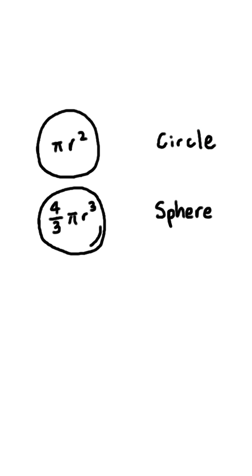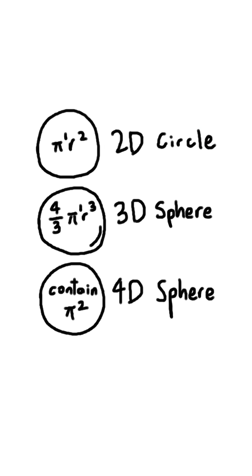Second, despite the fact that these formulas in 2D and 3D only have pi raised to the first power, formulas in four dimensions have pi squared.